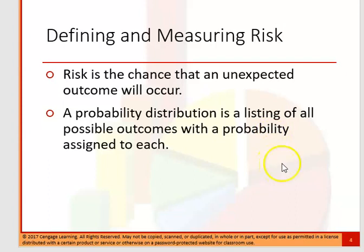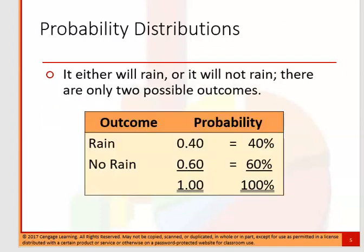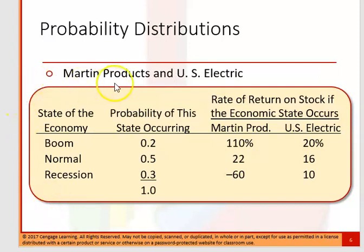Cash flow comes from either retained earnings, debt as we saw in the last chapter with bonds, or issuing equity — which is selling stock to people in return for money. One of the things they start talking about is probability distributions, because there is a certain probability that an unexpected event will occur. That's what we're trying to assess. Here you have a 40% chance of rain, a 60% chance of no rain — there's always a 100% chance it's going to be one of these things.